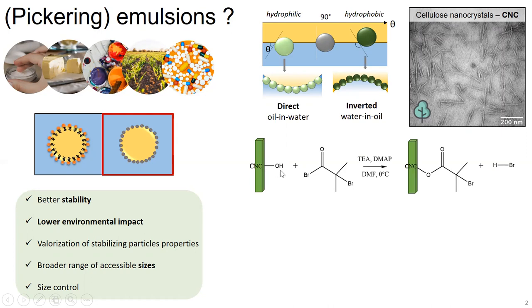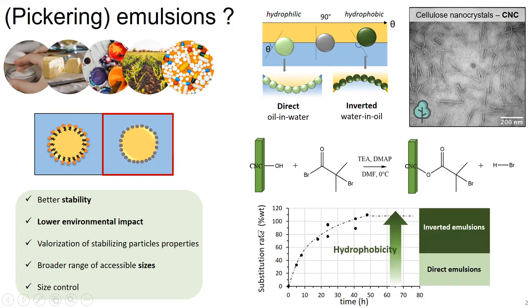To increase the hydrophobicity of these CNCs and allow the stabilization of both direct and inverted emulsions, we chose to use an esterification reaction to substitute the hydroxyl functions with brominated functions. We can follow the substitution rate of these hydroxyl groups by brominated functions over time. As time increases, the substitution rate increases along with the hydrophobicity, which enables us to stabilize both direct or inverted emulsions.